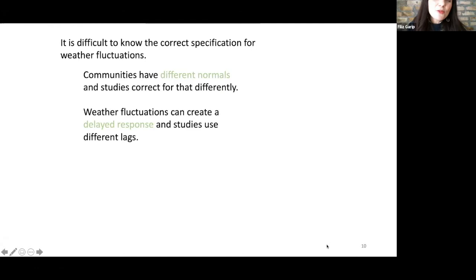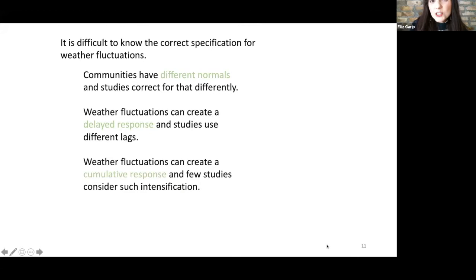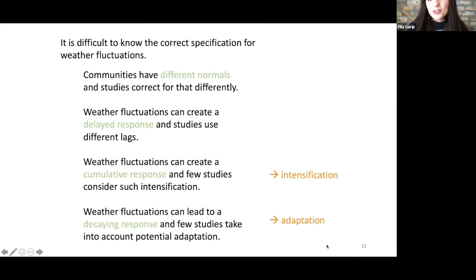Maybe a more difficult problem is that weather fluctuations can create a delayed response. For example, first year of low rainfall might not create an impact because there's an irrigation system in the community. But then if this lack of rainfall continues over time, then suddenly you start seeing the impact. This way, weather fluctuations can create a cumulative response. And few studies actually consider such intensification. Another alternative is the opposite of intensification where communities adapt. As you see rainfall dropping, maybe you change crops. So that way, the effect of this weather change on migration behavior could be reduced over time. This is what is known as adaptation. All of these processes would imply a different kind of empirical specification and would lead to different results.